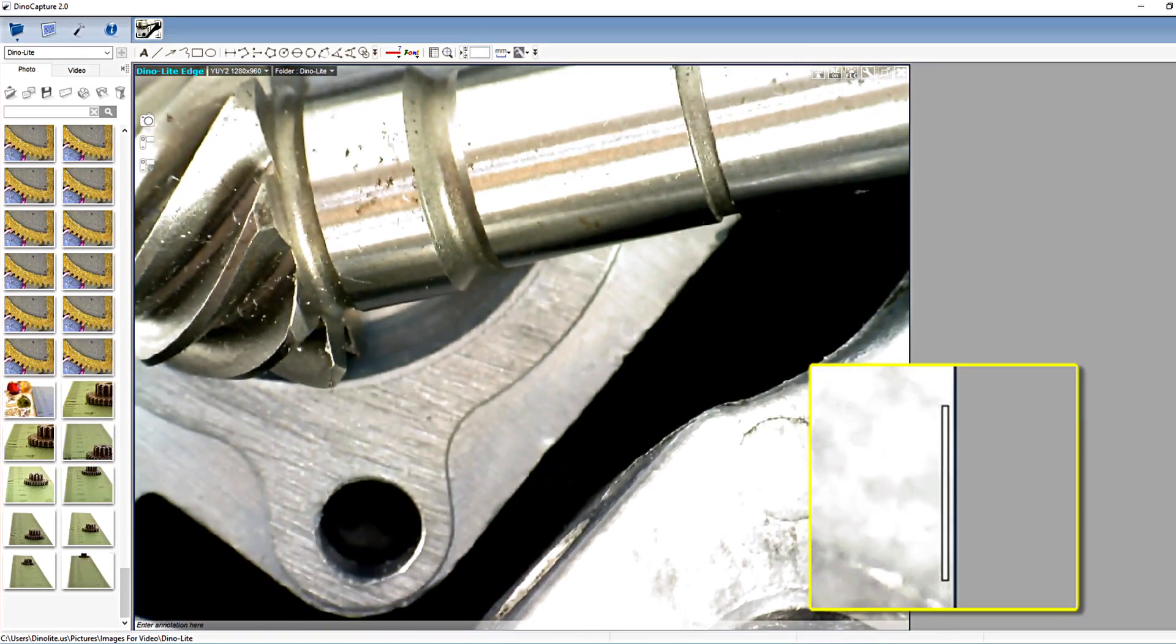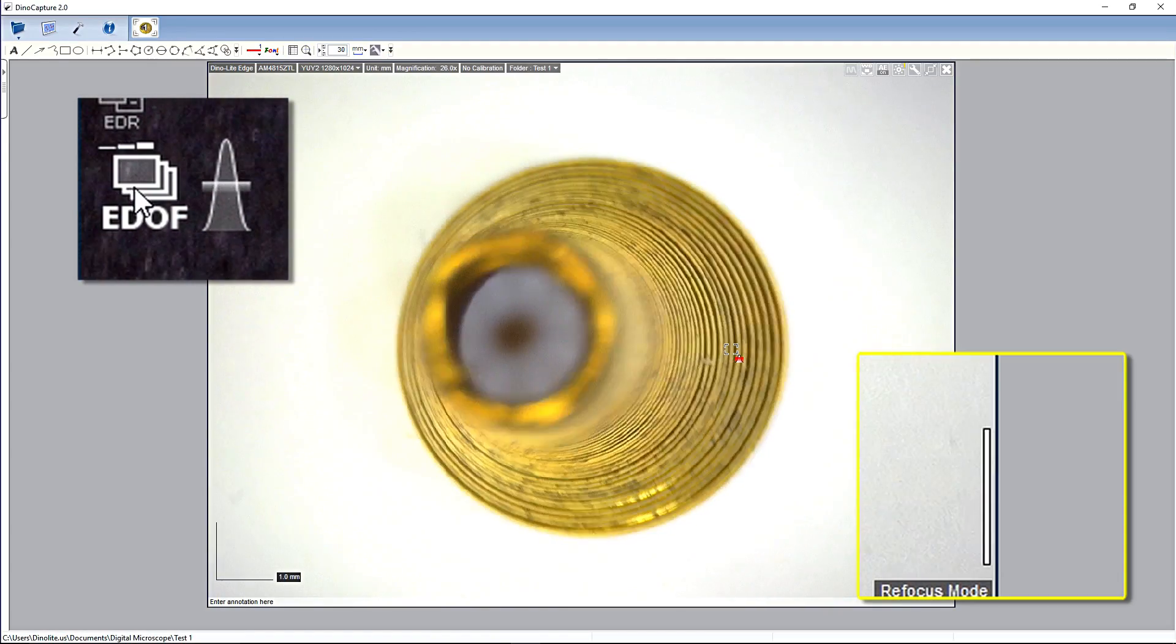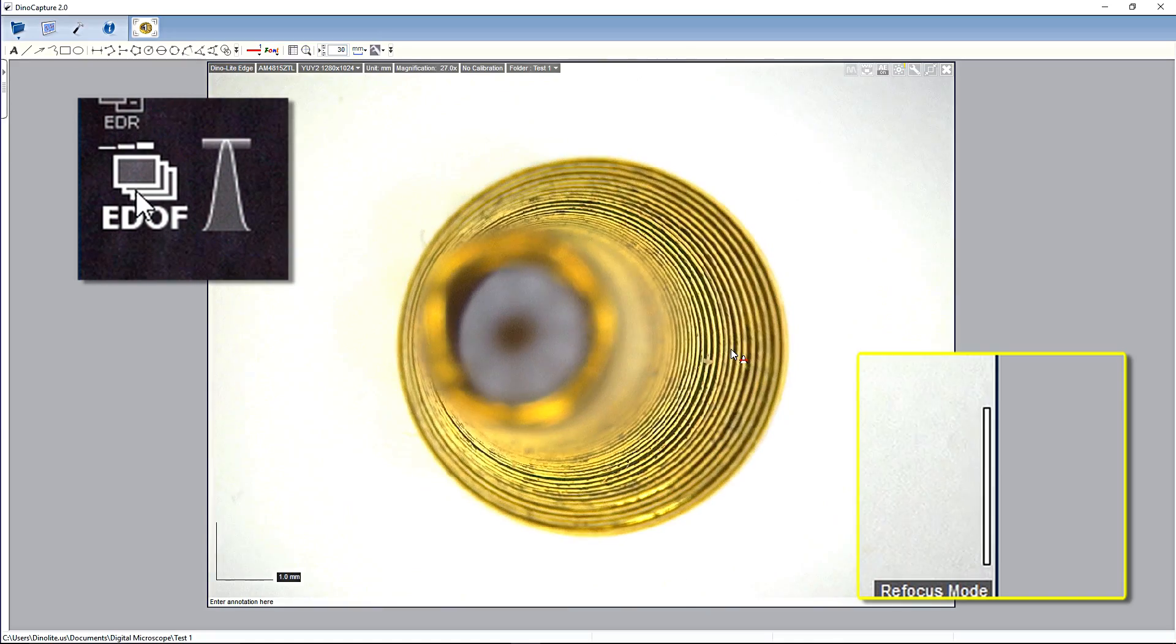In the live view window is a focus bar. This visual aid shows the level of focus. The longer the bar, the closer the image is to being in focus.